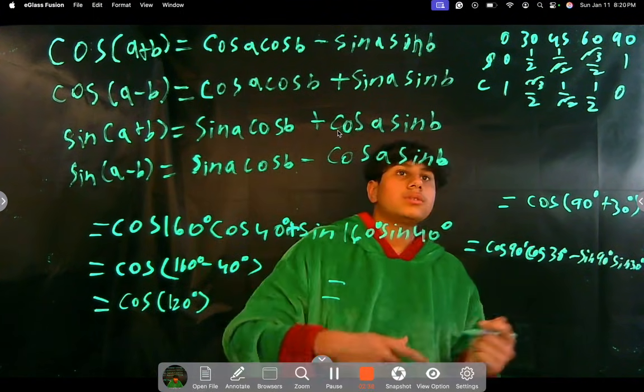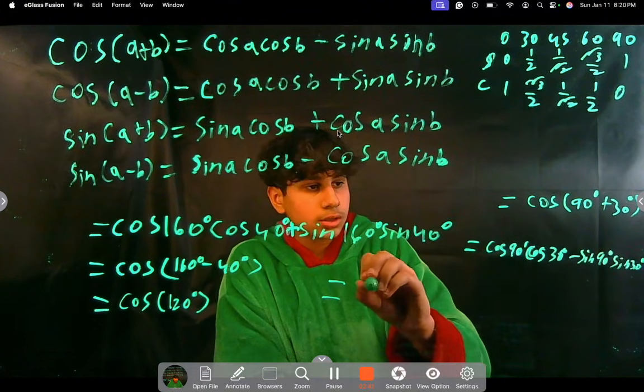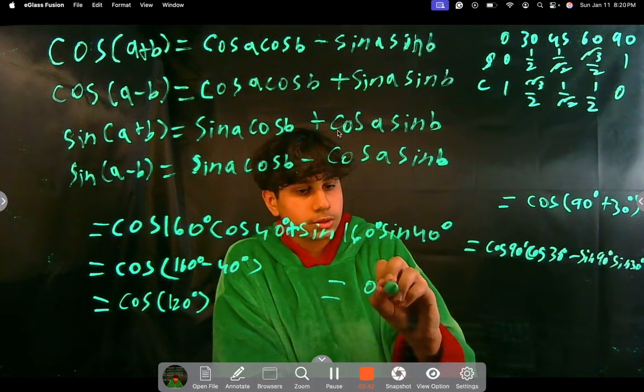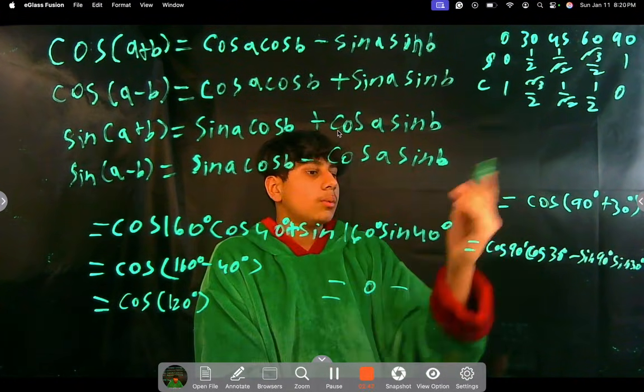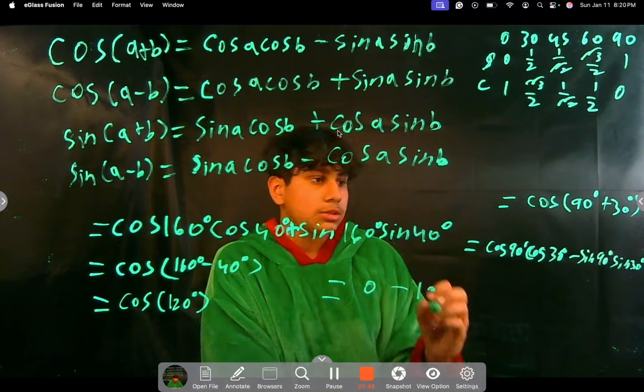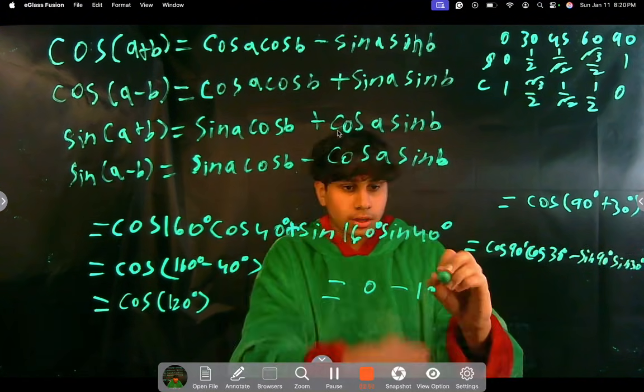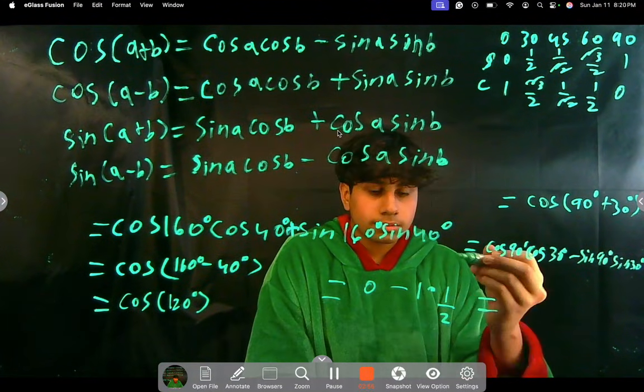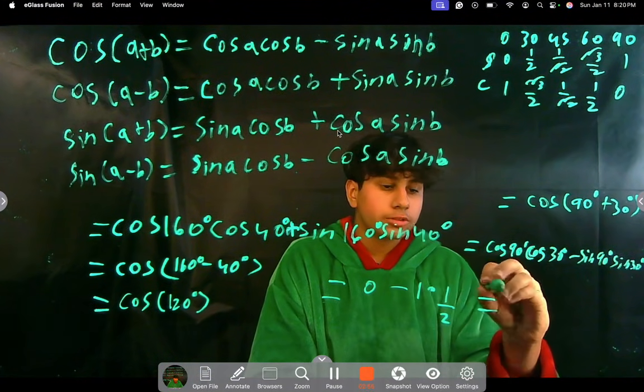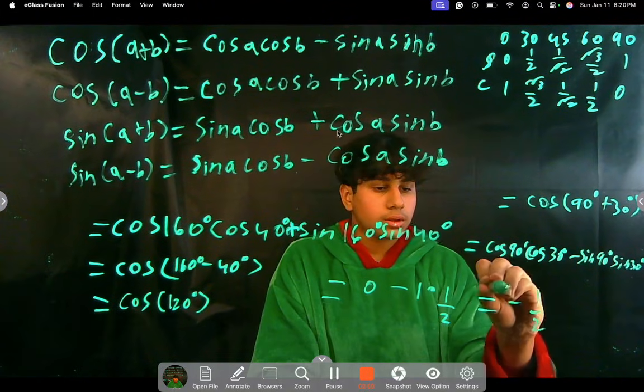Cosine of 90 is zero. Zero times anything is just zero, so we don't have to solve for the rest of it. Zero minus sine of 90 is one, one times sine of 30 is one half. And then this is then just going to be zero minus one times one half, which is just negative one half.